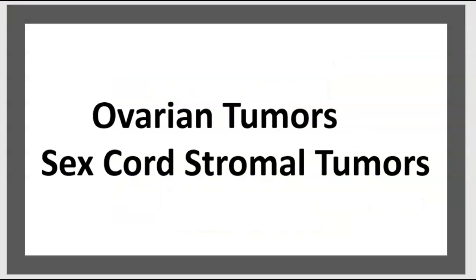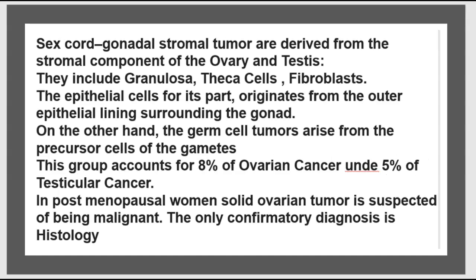Today's topic is about ovarian tumors: sex cord stromal tumors. Sex cord gonadal stromal tumors are derived from the stromal component of the ovary and testes. They include granulosa cells, theca cells, and fibroblasts. The epithelial cells originate from the outer epithelium lining surrounding the gonad.